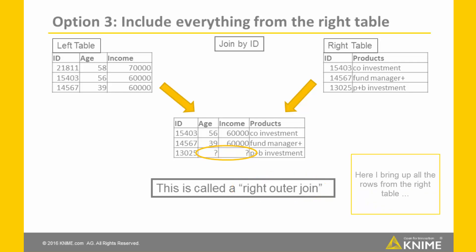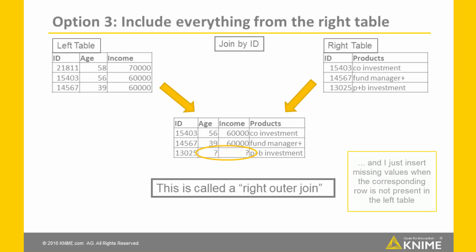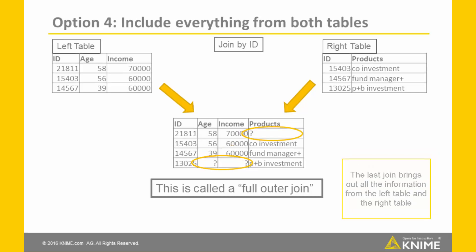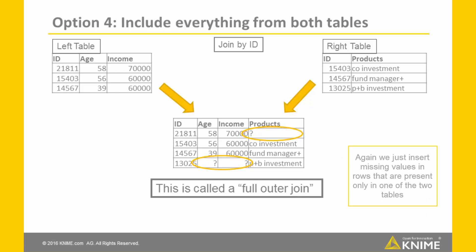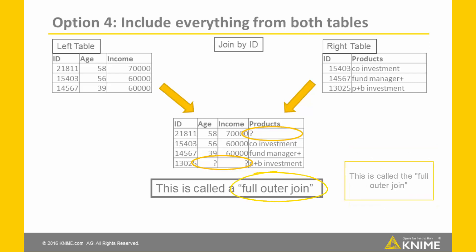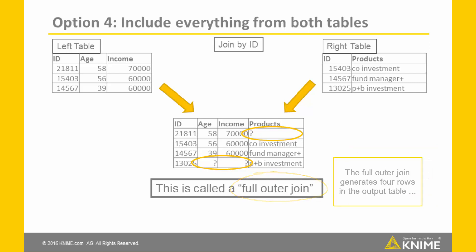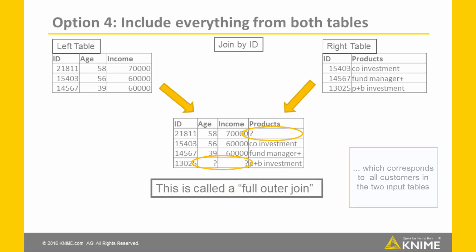An analogous approach using all rows from the right table and tolerating gaps from the left table is called right-outer join. Here, I bring in all the rows from the right table and insert missing values when the corresponding row is not present in the left table. The last join, called the full-outer join, brings out all the information from both tables, inserting missing values for rows present only in one table. The full-outer join generates four rows in the output, corresponding to all customers in the two input tables.